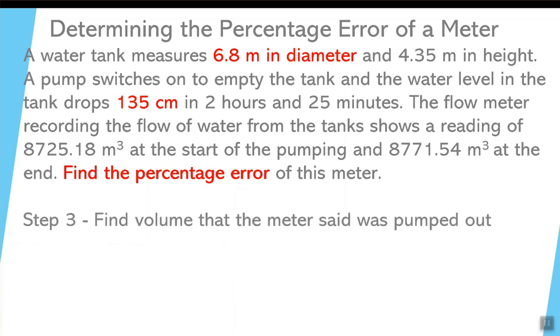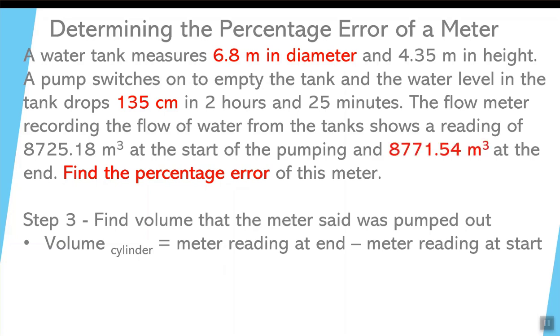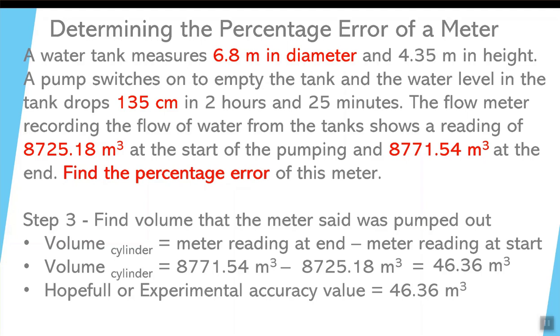The next part in this question is what does the meter say in terms of the volume that moved out of the tank. Now, the meter reading at the end was 8,771.54 cubic meters. So that, at the end of the time period, that's how much water moved past the meter. At the beginning of that time period, the volume was 8,725.18. So you take the difference between that, and the answer is 46.36. So the meter said, in that time period, 46.36 cubic meters passed out of the tank. Now obviously, this particular number is different than the number that we know for a fact. But we are hoping that this number is as close as possible to our accepted value. So this is our hopeful or experimental value.